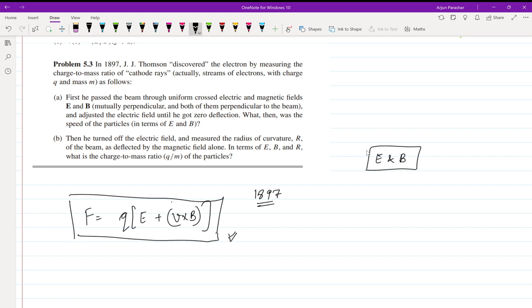He adjusted the electric field until he got zero deflection. Zero deflection means that the force acting on the particles got to zero and the path becomes a straight line. So instead of deflection, they pass straight through like just straight lines—the beam passes like straight lines.